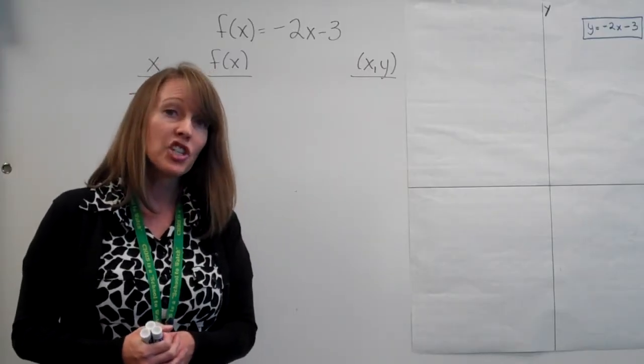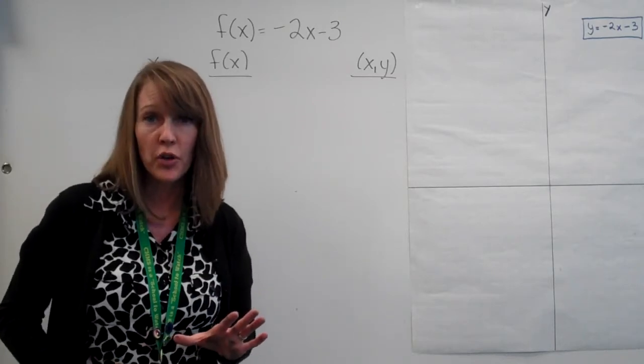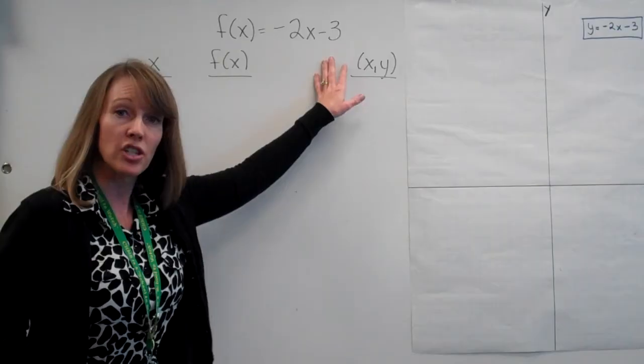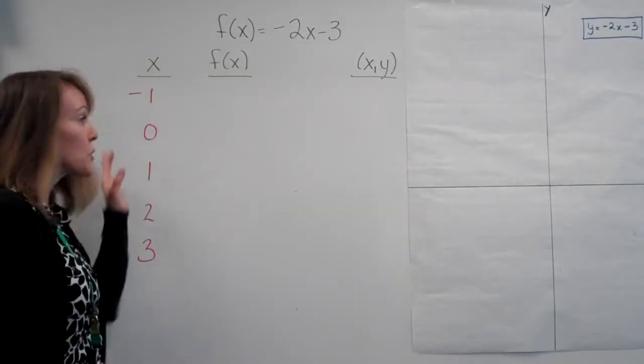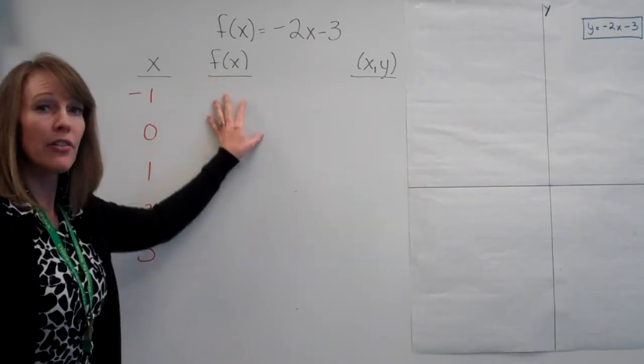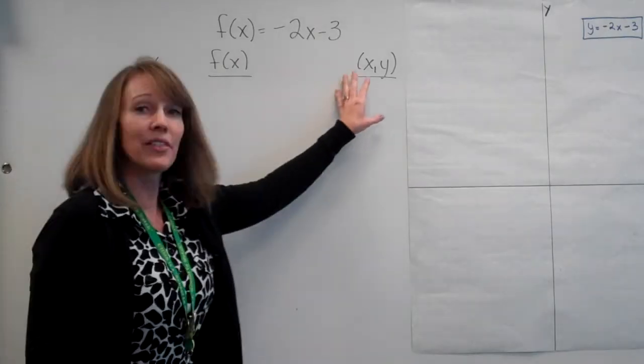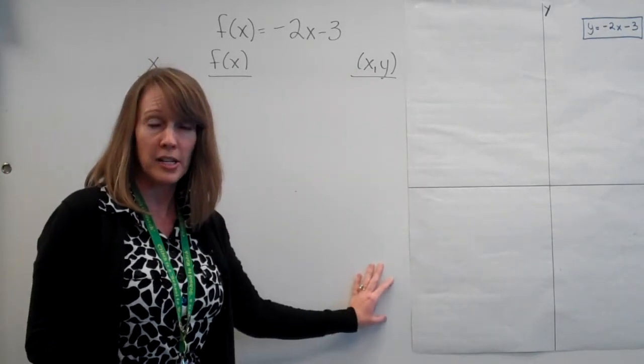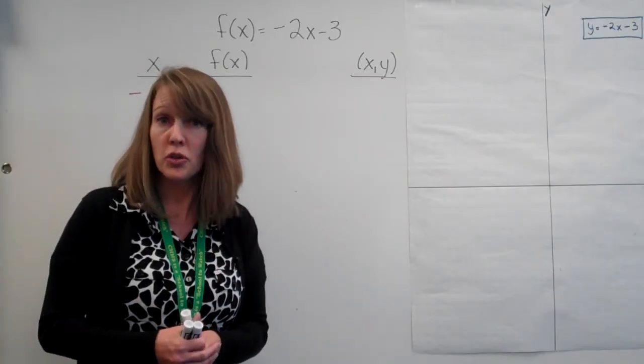So you're going to be given a sheet of paper at this point in time with a T-chart that's already going to be filled out for you. It's going to be given your equation, your f of x function. It'll have a column for your x's which will already be filled out, so you'll have your domain. You'll have an area to do your work, and you must show your work. You'll also be given a place to put your ordered pairs. So let me show you how this is going to happen so you can do it on your own.